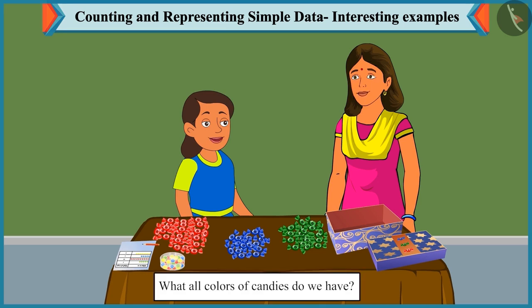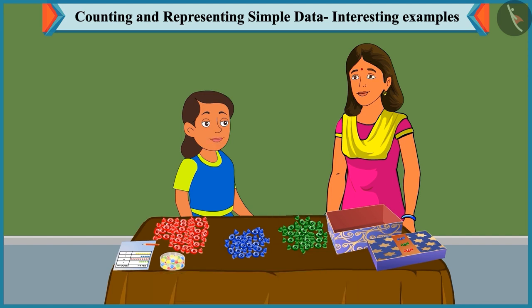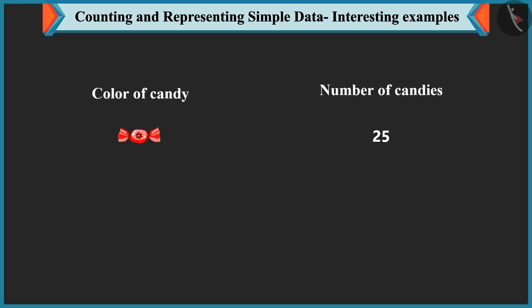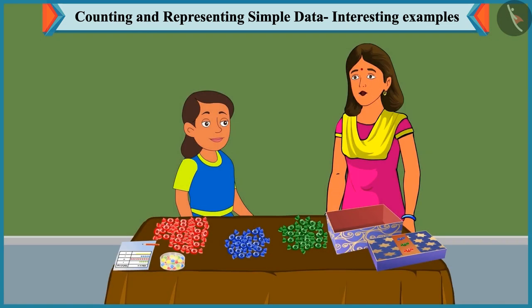We have red, blue and green coloured candies. Come on, now tell me the number of candies of each colour. There are 25 red colour, 19 blue and 21 green colour candies. Absolutely right. Very good.